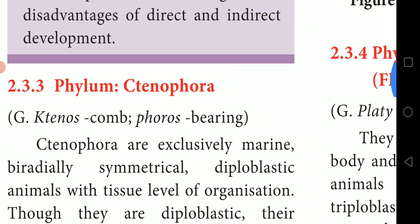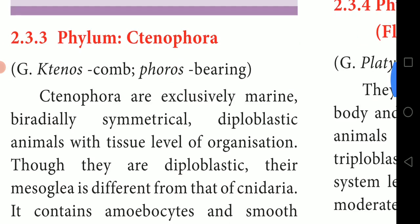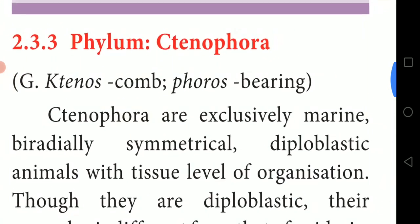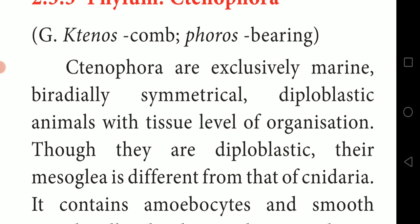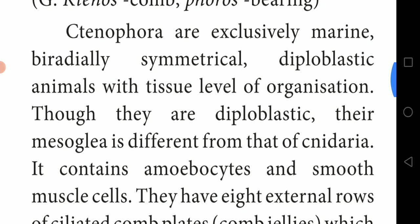The next topic is Phylum Ctenophora. It is a Greek word: 'tenos' means comb, 'porus' means bearing. Ctenophores are exclusively marine. They are bi-radially symmetrical, diploblastic animals with a tissue level of organization. Their mesoglea is different from that of Cnidaria.